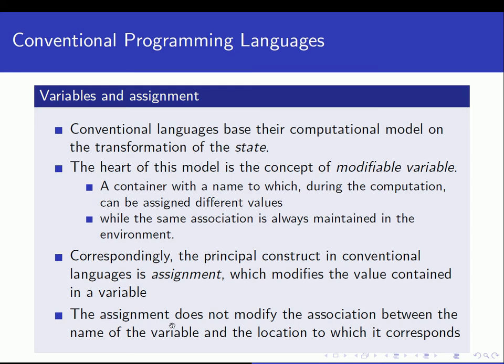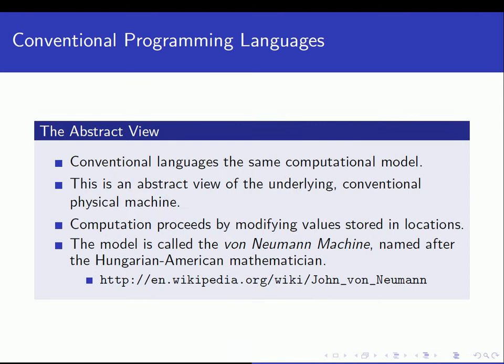The assignment statement does not modify the association between the name of the variable and the location to which it corresponds. We are not changing the memory location — the association between the name and the location. We're only changing the value of the variable. Most conventional languages use this same computational model, and this model is an abstract view of the underlying physical machine: computation proceeds by modifying values stored in locations.